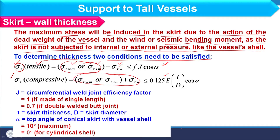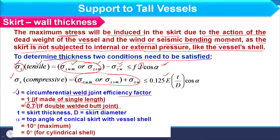Key parameters: J is the circumferential weld joint efficiency factor — equal to 1 if made by a single length weld, and 0.7 if a double welded butt joint is used. T is skirt thickness, D is skirt diameter, and f is the allowable stress. These parameters appear in both the tensile and compressive thickness expressions.